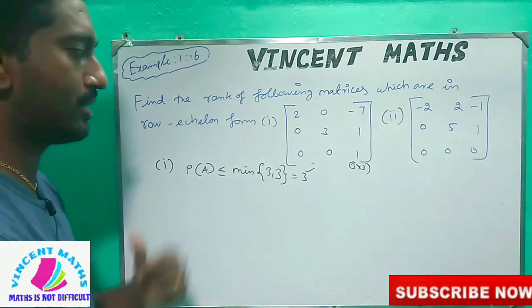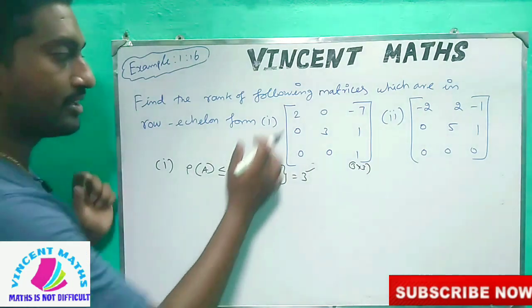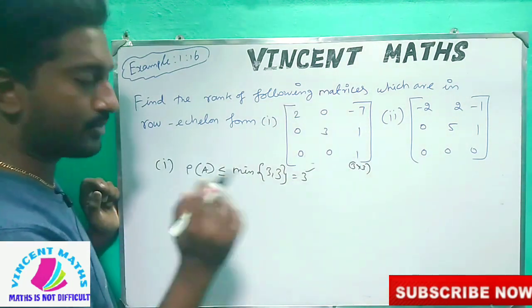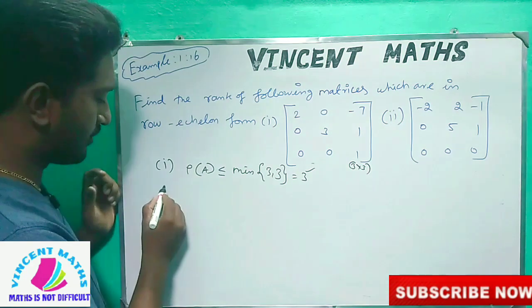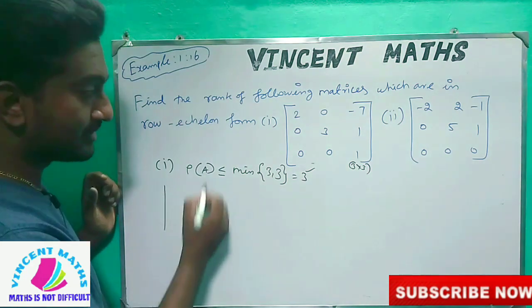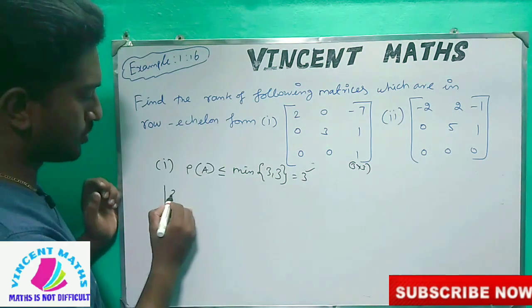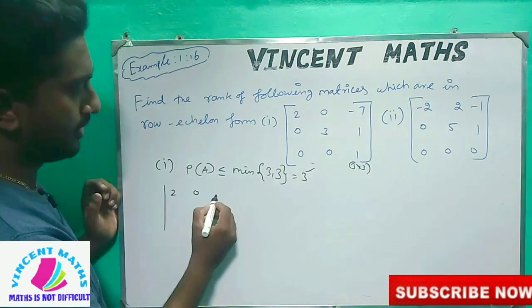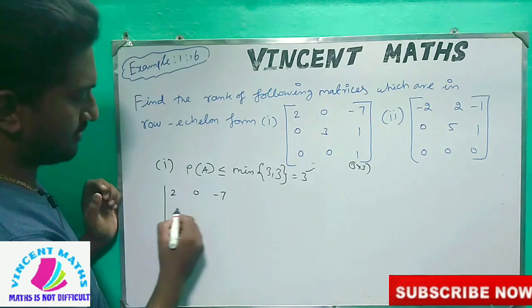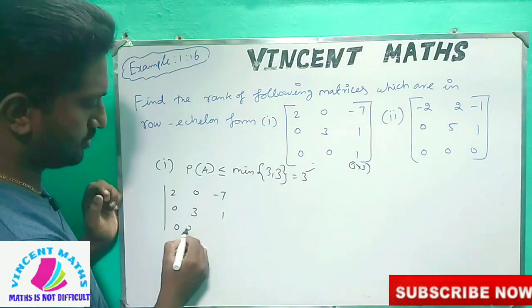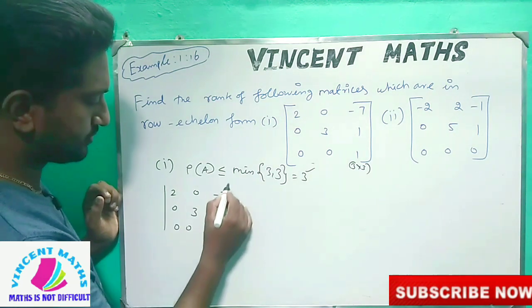How do we write this? If we write this matrix, how do we write this determinant? We write: 2, 0, minus 7; 0, 3, 1; 0, 0, 1.